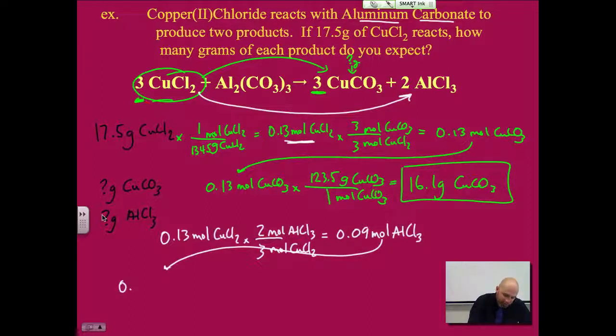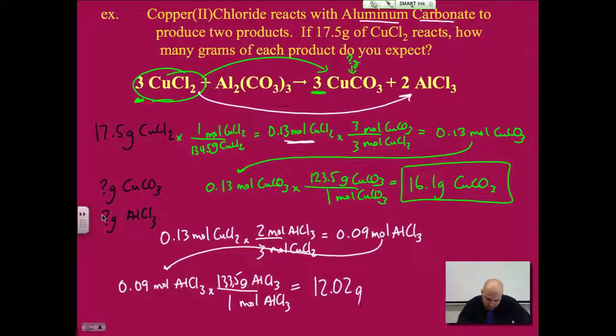0.09 moles of AlCl3. X, line. Moles, AlCl3. Grams, AlCl3. One, I look up aluminum chloride on the periodic table. It's 133.5. And I get 12.02 grams of AlCl3. There would be my box right there. So if I had 17.5 grams, I would get these two amounts of product reacting.